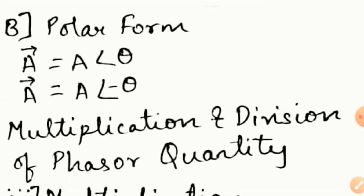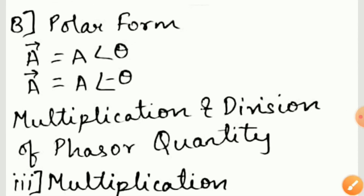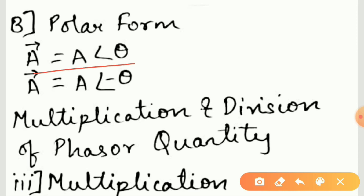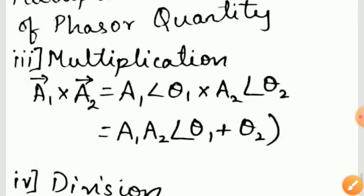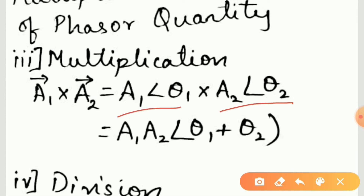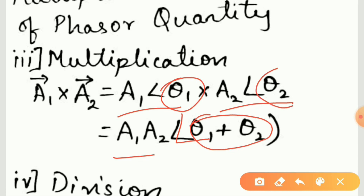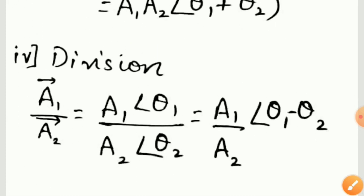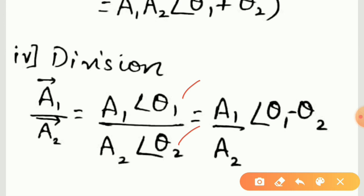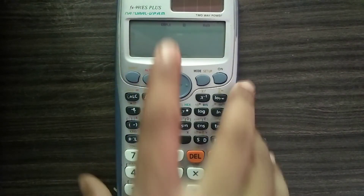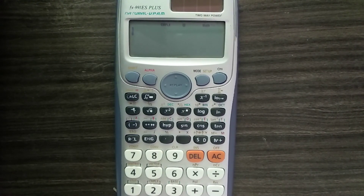For multiplication and division of phasor quantities, we consider the polar form: a is equal to a at an angle theta, or a at an angle minus theta. For multiplication, we multiply the two polar equations and get a1·a2 at an angle of theta 1 plus theta 2 — the angular parts are added. For division, a1 by a2 equals a1 at angle theta 1 upon a2 at angle theta 2 — the angular part is subtracted.